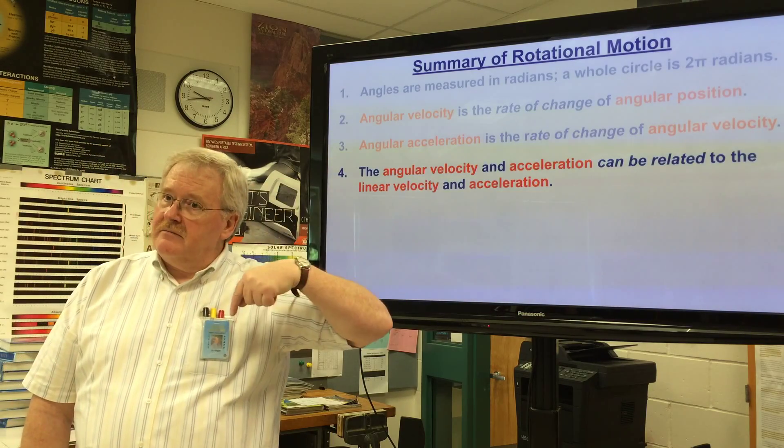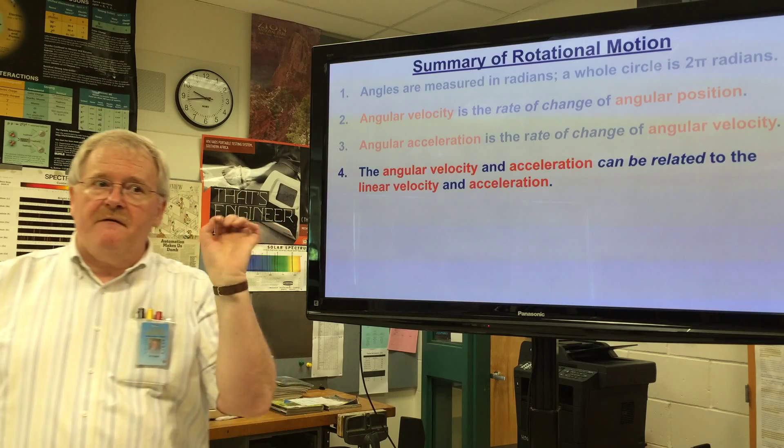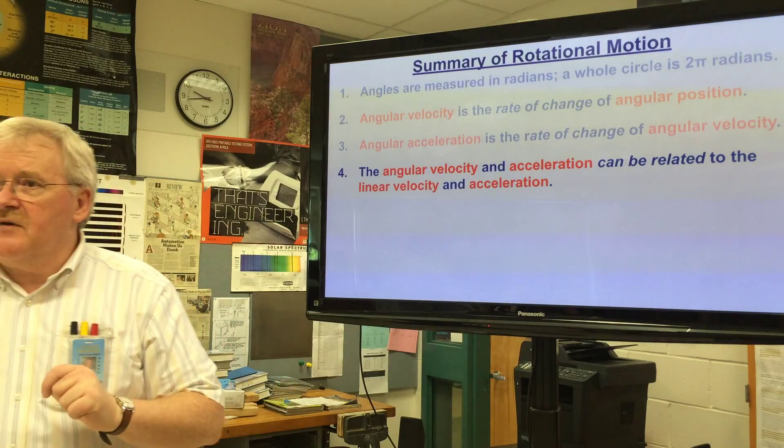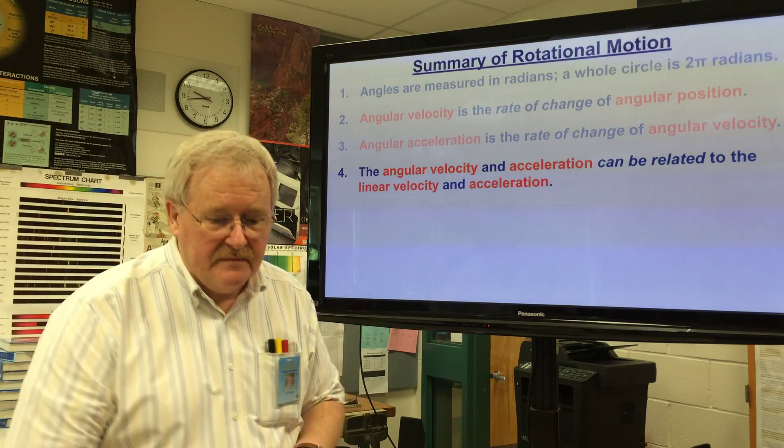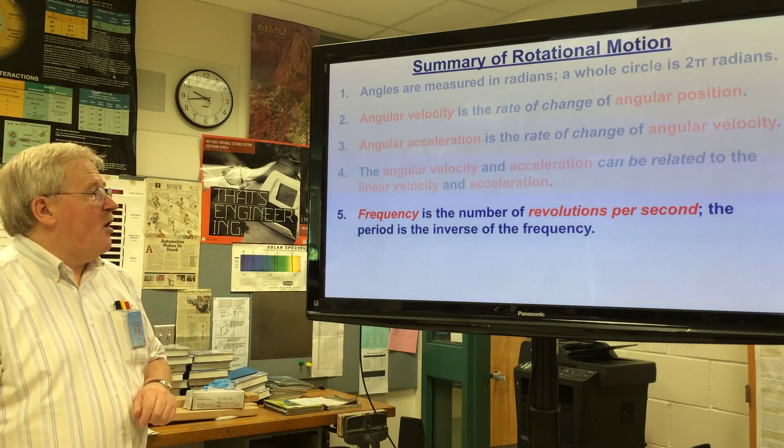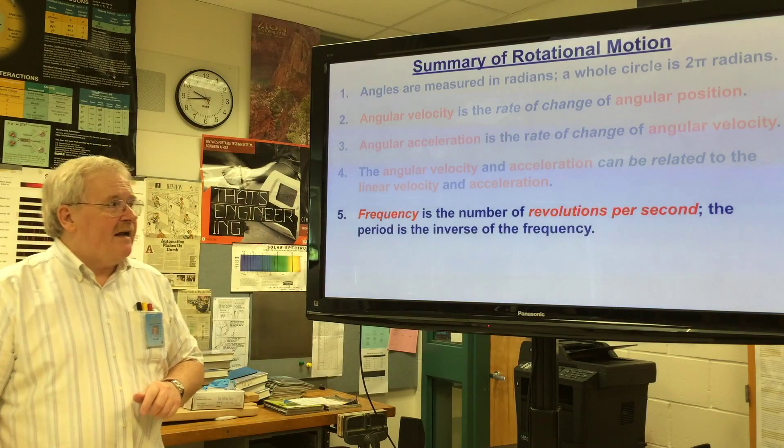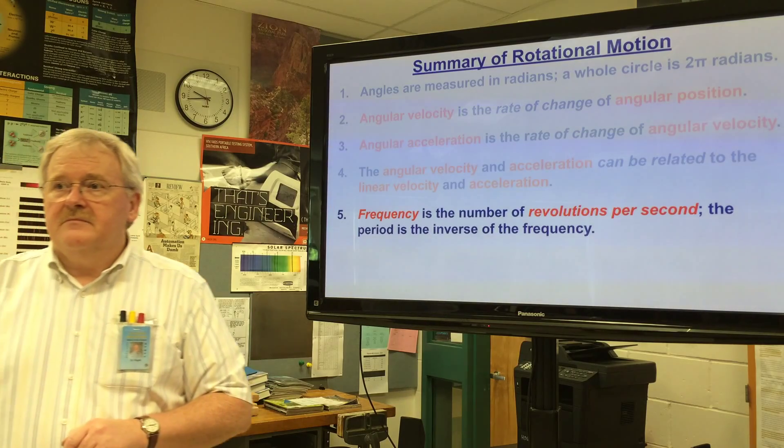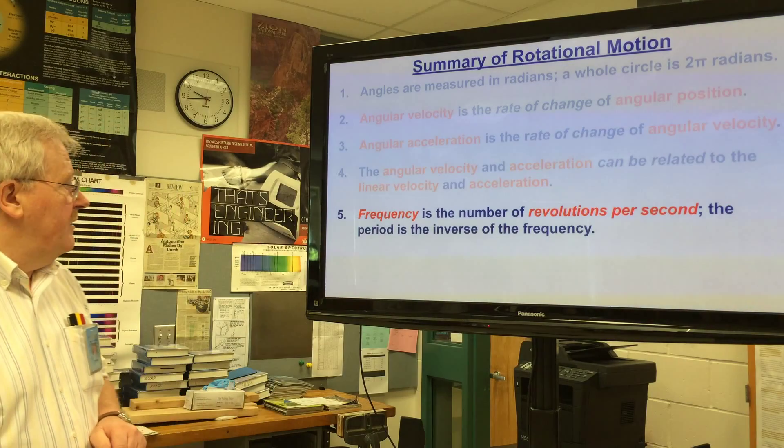The angular velocity and acceleration can be directly related to the linear velocity and acceleration at any point on the object that's spinning. It just depends how far away from the axis of rotation that point is.